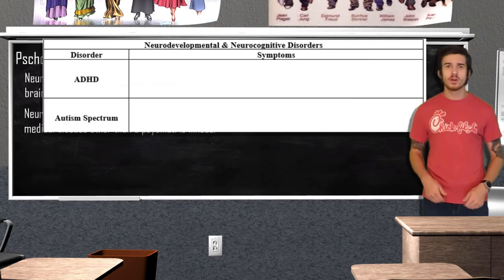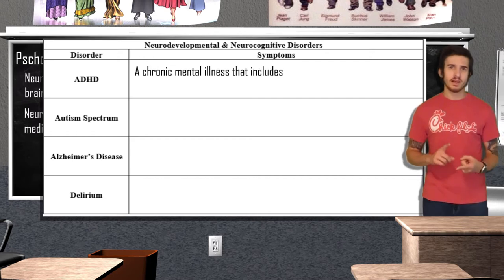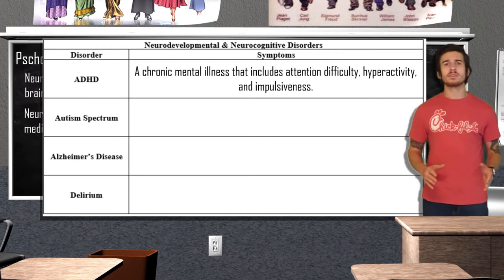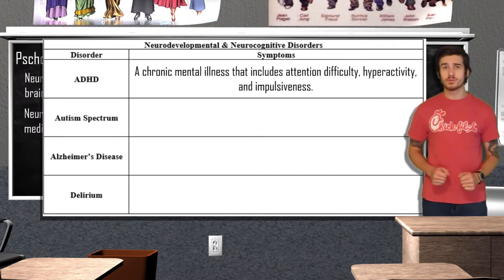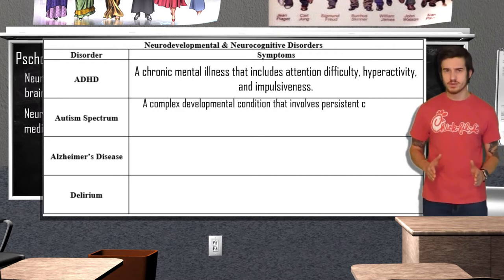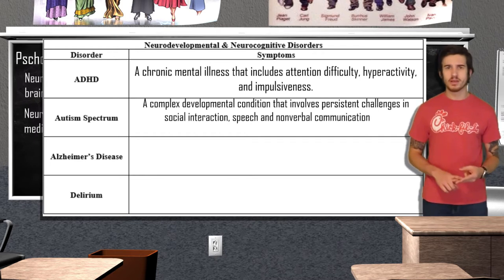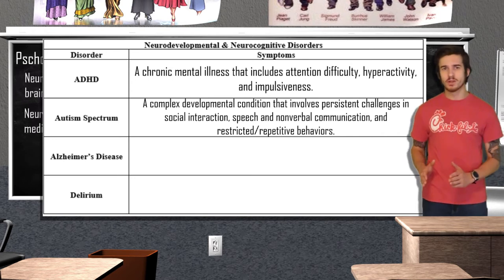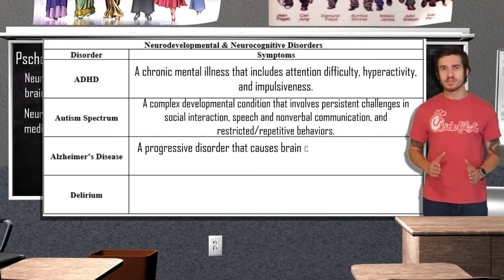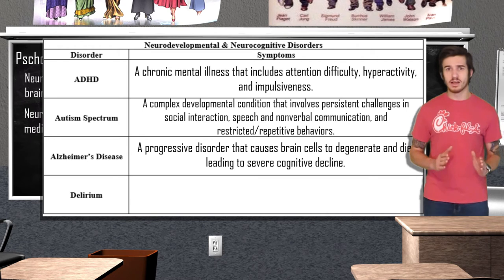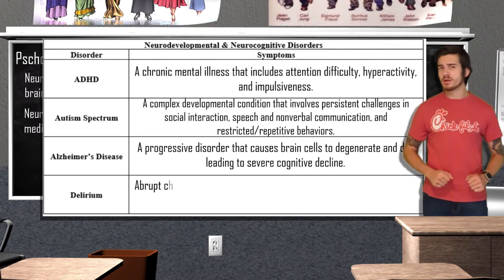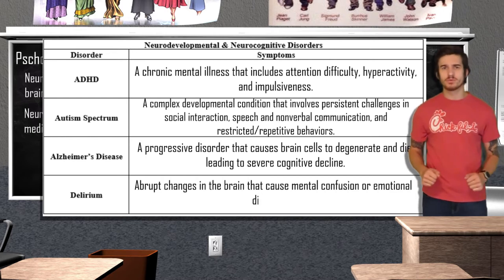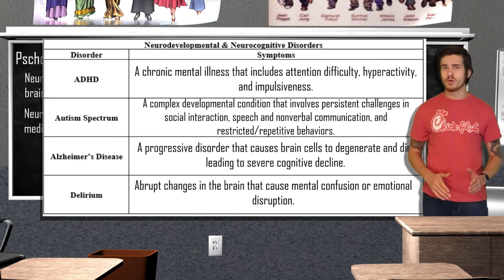Autism spectrum disorder is a complex developmental condition involving persistent challenges in social interaction, speech, and nonverbal communication; individuals can be high or low functioning. Alzheimer's disease is a progressive disorder in which brain cells degenerate and die, causing severe cognitive decline, especially in memory — 1 in 10 people over 65 is diagnosed. Delirium is an abrupt change in the brain causing mental confusion or emotional disruption, making it difficult to sleep, pay attention, or think.